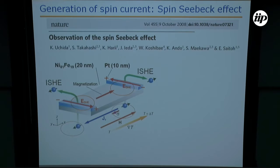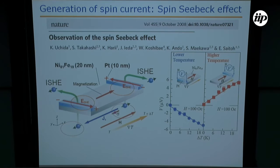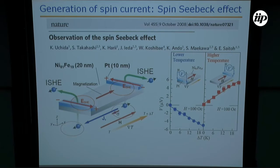A few years later, Eiji Saito did a different experiment. He took a film of permalloy, applied a temperature difference along the film, and put platinum strips to measure the voltage. The voltage results from a spin current produced by the temperature gradient. The spin current builds up spin accumulation, so there is spin current going in one direction here and in the opposite direction there, and the platinum strips convert them into charge current. They measured negative voltage at one end and positive voltage at the other end, and they named this the spin Seebeck effect.